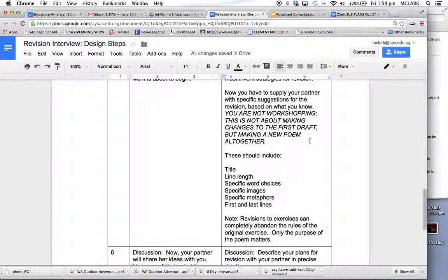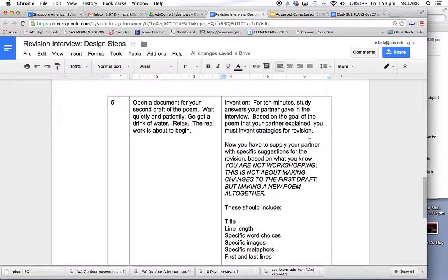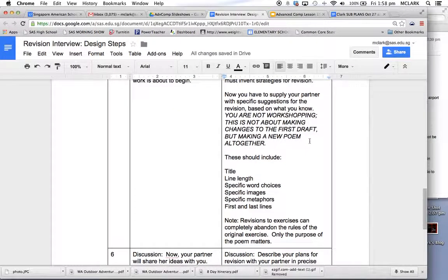To, as quickly as you can, come up with a new title, a pattern for line length, some specific word choices and images and metaphors, and a first and last line. You are trying to invent a form for the next version of this poem.